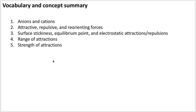To summarize: we talked about anions and cations, attractive, repulsive, and reorienting forces, surface stickiness and equilibrium points, electrostatic attractions and repulsions, the range of interactions — the distance at which species still feel each other — and the strength of attractions — how much energy it takes to pull two species apart.